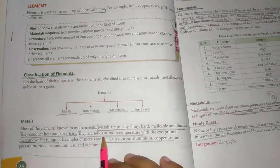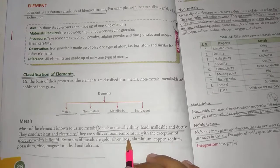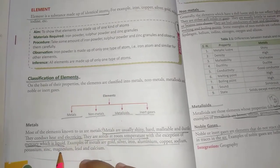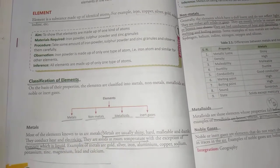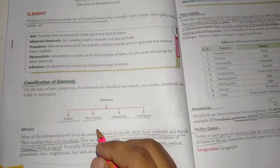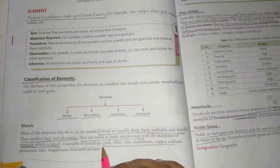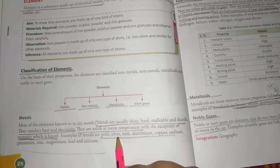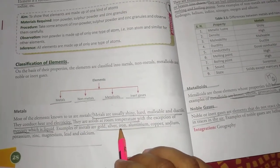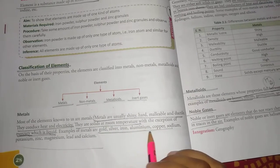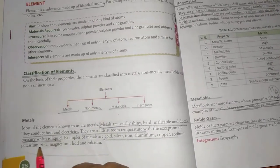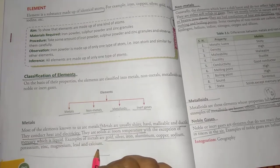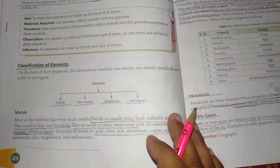Metals are solid at room temperature. Only mercury is liquid, which you can see in thermometers as a silver-colored element. Examples of metals include gold, silver, iron, aluminum, copper, sodium, potassium, zinc, magnesium, lead, and calcium.